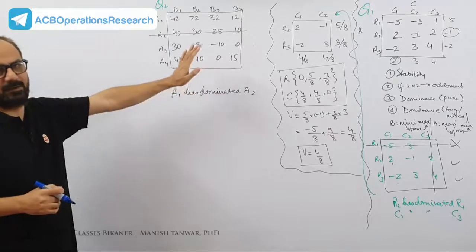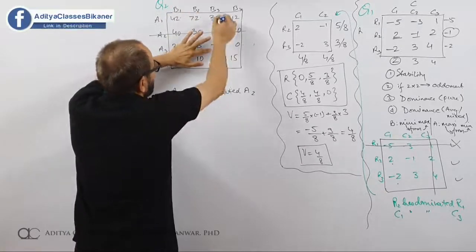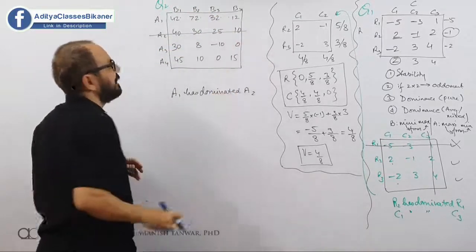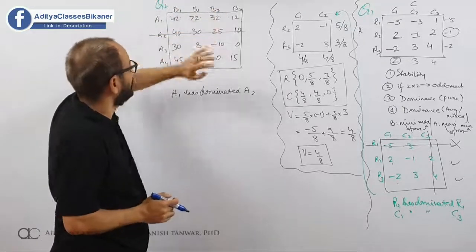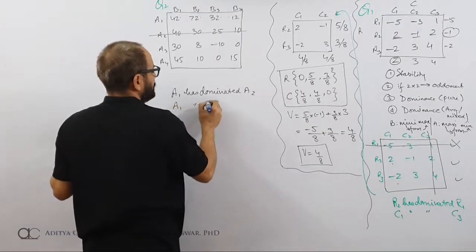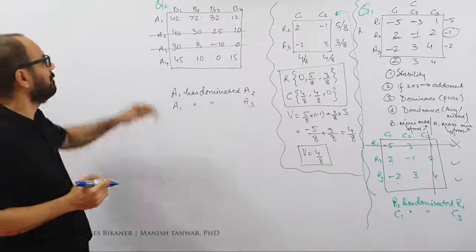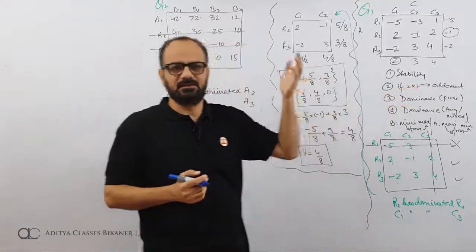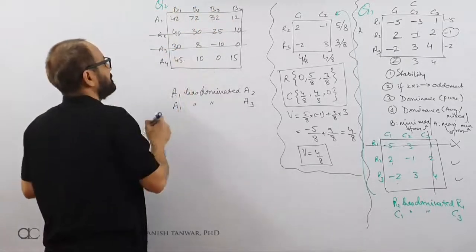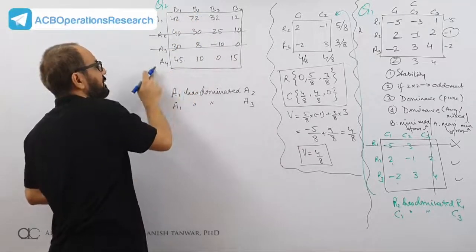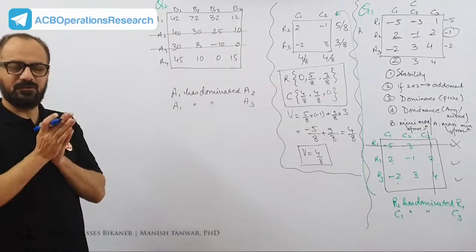Now A1 plays against A3: 42 beats 30 (or 38), 72 beats minus 10, 32 beats minus 10, 12 beats 0 — A1 gives better returns in all cases. So A1 has dominated A3, and A3 is also removed. Comparing A1 against A4: 45 beats 42 in one case but 72 beats 10 in another, so no dominance between A1 and A4. We are now down to two rows.